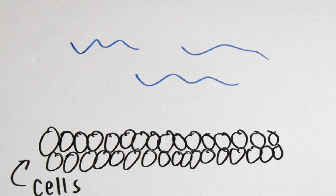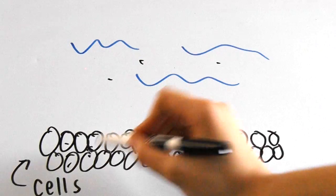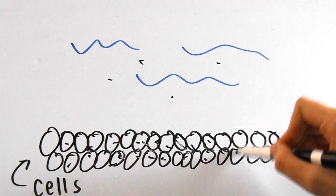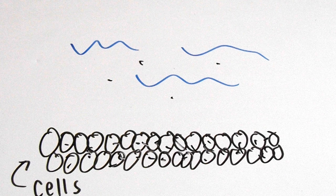We can also say that the freshwater fish's cells are hypertonic to the surrounding water because the fish has a higher solute concentration inside its body than outside in the water.